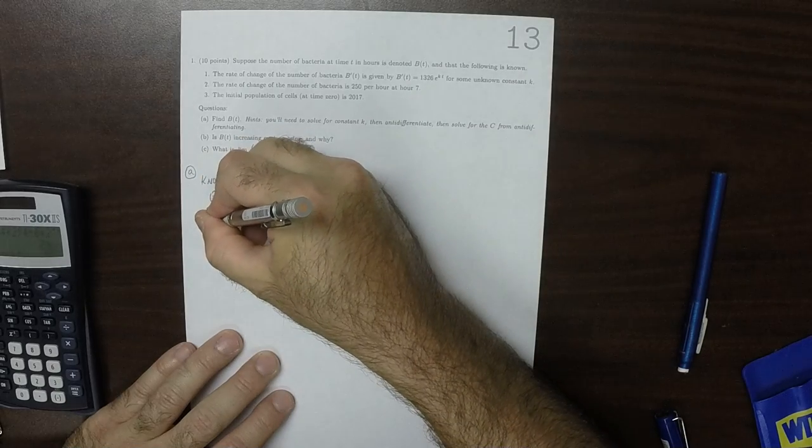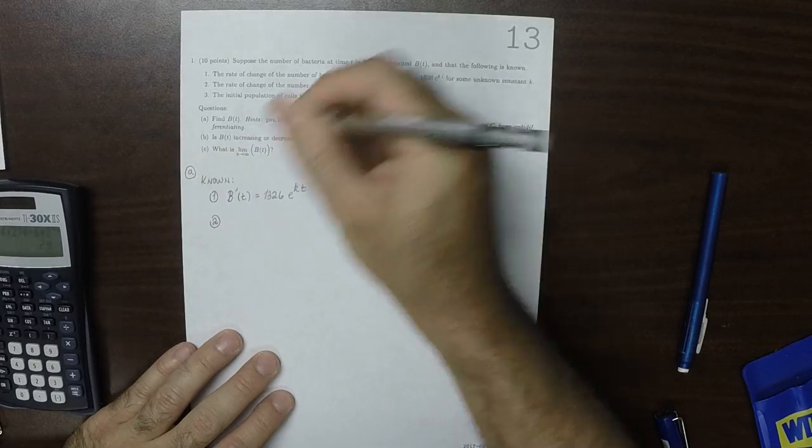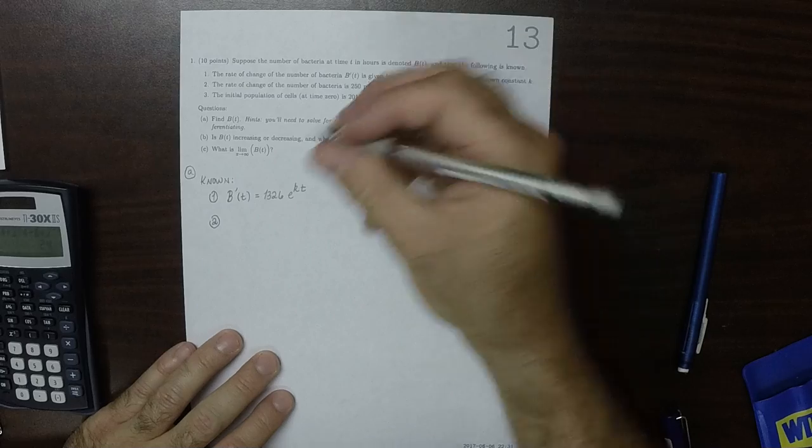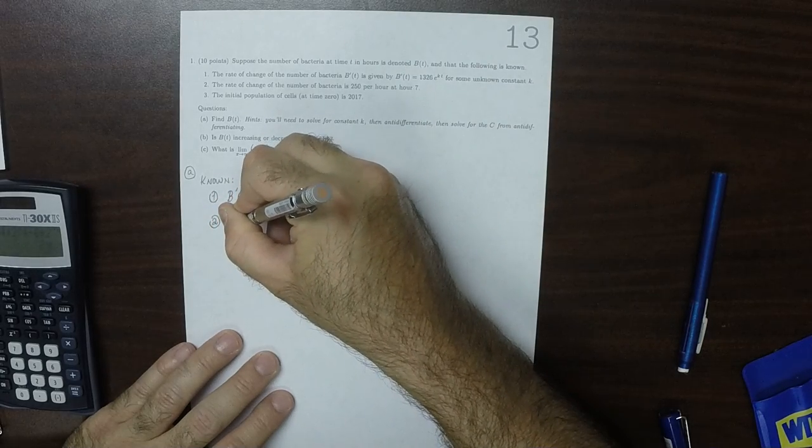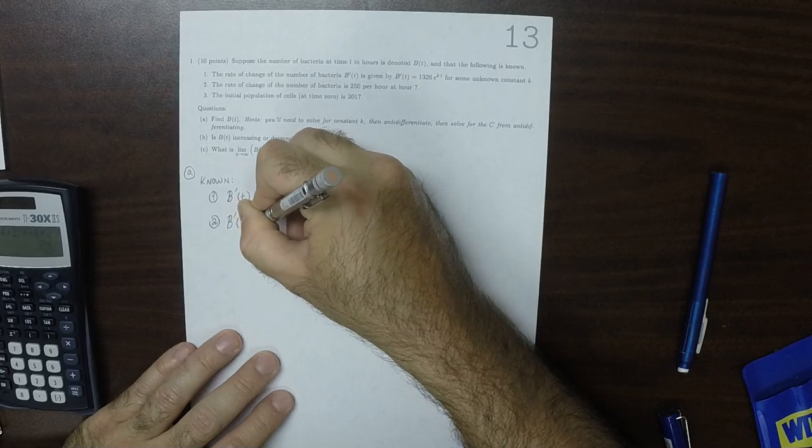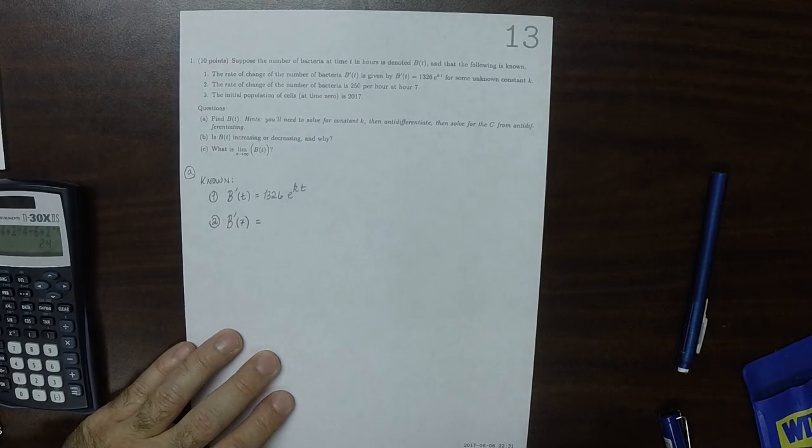From item 2, that is saying that the derivative evaluated at 7, then the derivative evaluated at 7 is 250.